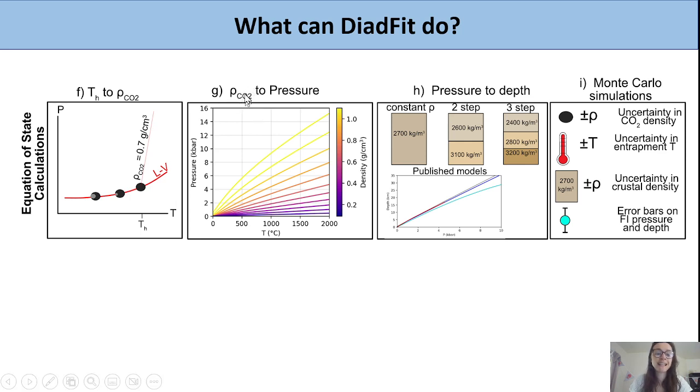You can also convert the density of CO2 to storage pressure or entrapment pressure at a variety of temperatures. This is using the equation of state to relate these variables. This is your common workflow for fluid inclusions once you've determined their density using microthermometry or Raman spectroscopy.